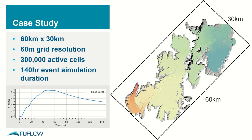To start with, I'll tell you a little bit about the model we've used for the testing. It's 60km long and 30km wide. It uses a 60m grid resolution, which translates to 300,000 active cells. The event which we've modelled has run for 140 hours.